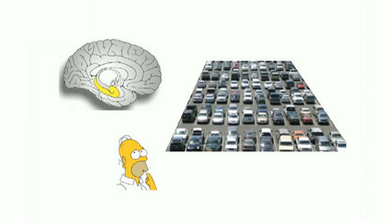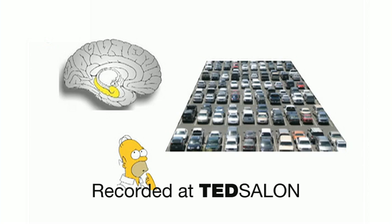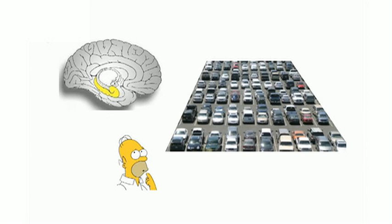So we start with the hippocampus, shown in yellow, which is the organ of memory. If you have damage there, like in Alzheimer's, you can't remember things, including where you parked your car. It's named after the Latin for seahorse, which it resembles. And like the rest of the brain, it's made of neurons.